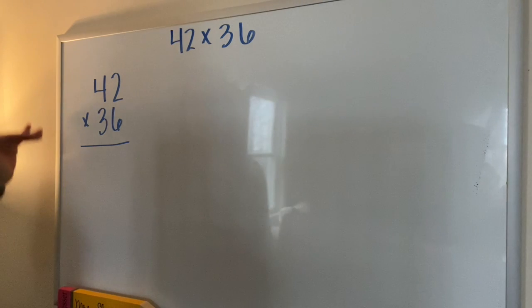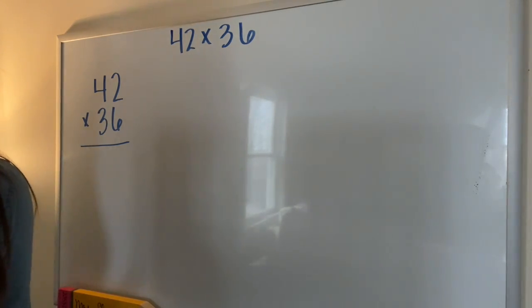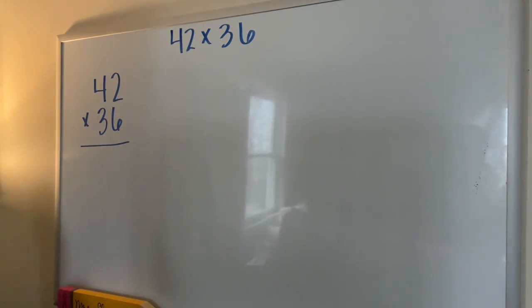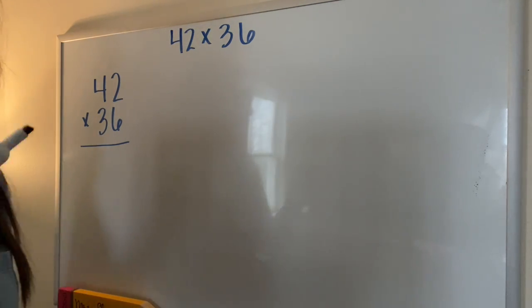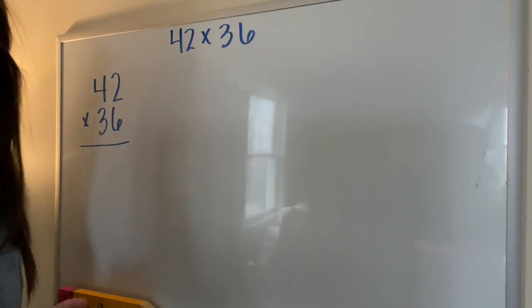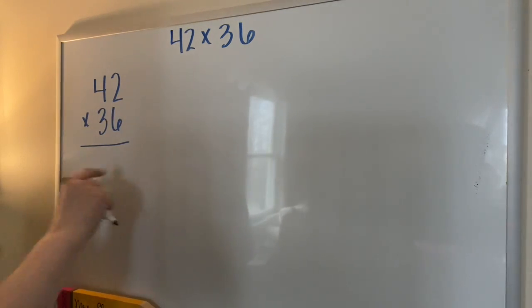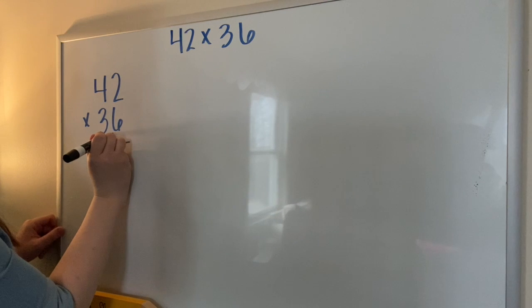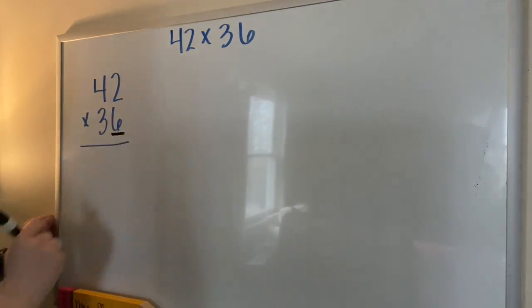I'm going to start by giving you an example of this standard algorithm. This is my original problem. I'm going to write it like this, just like I would write an addition or a subtraction problem. My first step, I'm going to use different colors for different steps so you can see when I do what. I'm going to use black for this step, and I'm going to multiply this digit six by the number 42.